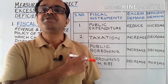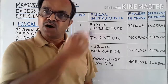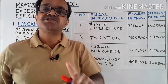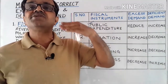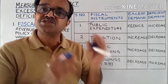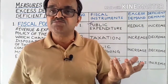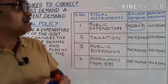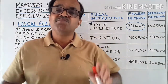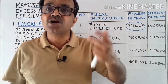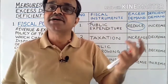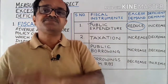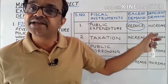The first fiscal instrument is public expenditure — whatever the government spends on various policies, programs, and constructions. During excess demand, aggregate demand is more, so the government will reduce its public expenditure. This decreases the disposable income of the people, which leads to a decrease in total expenditure in the economy, meaning aggregate demand will fall.